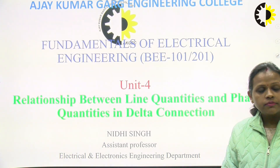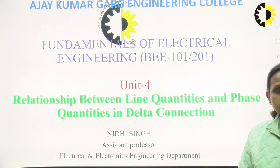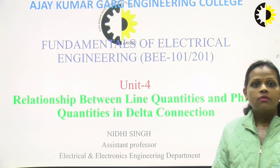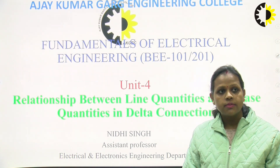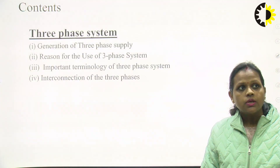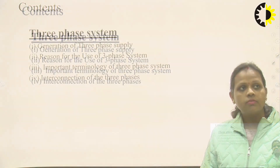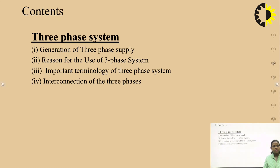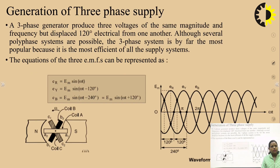Before starting with the relationship between line quantities and phase quantities in delta connection, we will discuss a few points regarding three-phase AC circuits. The contents of this lecture are: generation of three-phase supply, reason for use of three-phase system, important terminology of three-phase system, and interconnections of three phases, in which we derive the relation for delta connection.